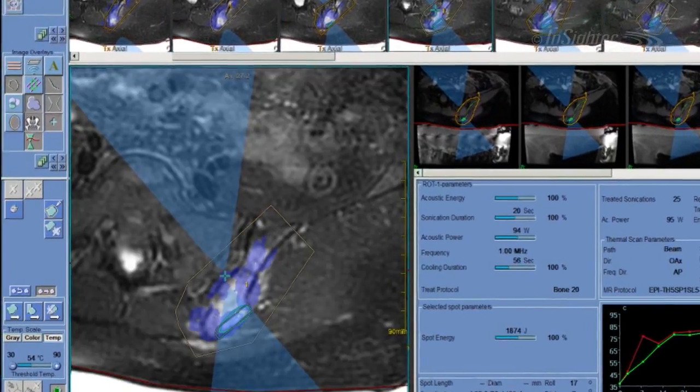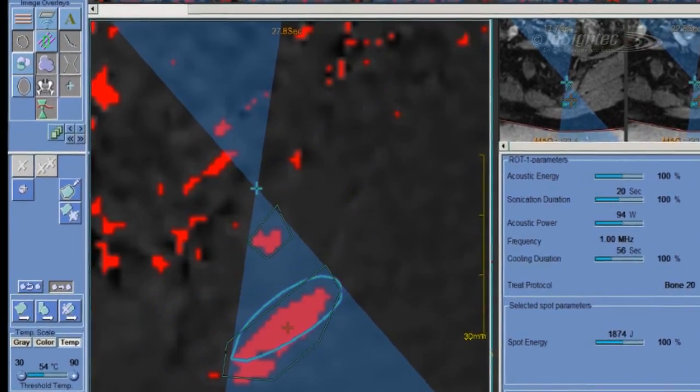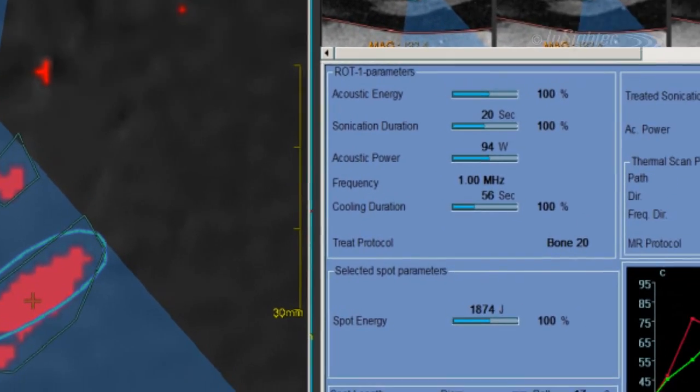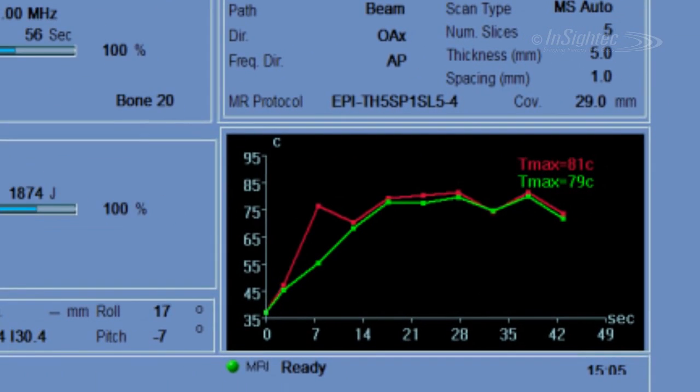The treatment goal is to fully ablate the targeted tissue in the defined region of treatment by ensuring adequate temperature rise at the bone-soft tissue interface.